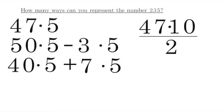Instead of thinking what way is better than the other, I think it's really good for students to look at many different ways to represent numbers. For example, 235 can be represented as 47 times 5, and 50 times 5 minus 3 times 5, and 40 times 5 plus 7 times 5. All three of those will lead to 235 as an answer. Or we can do 47 times 10 divided by 2. 470 divided by 2 is 235.